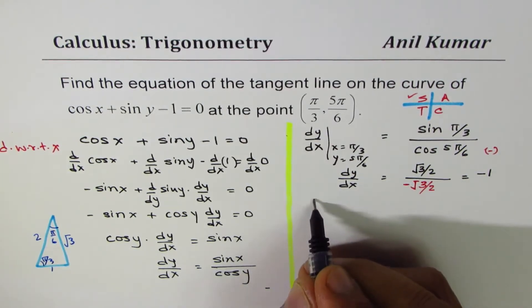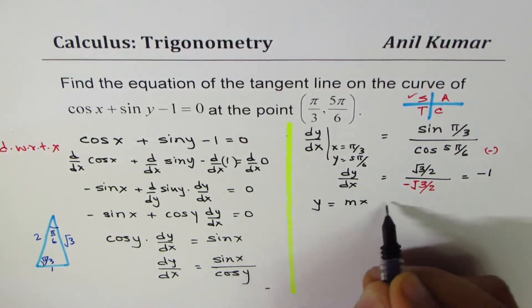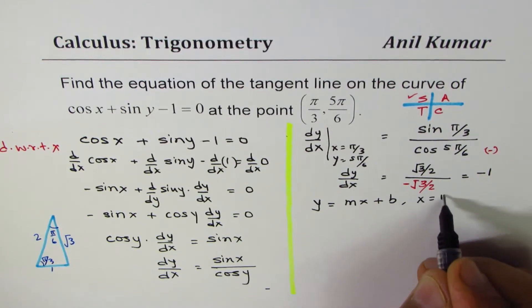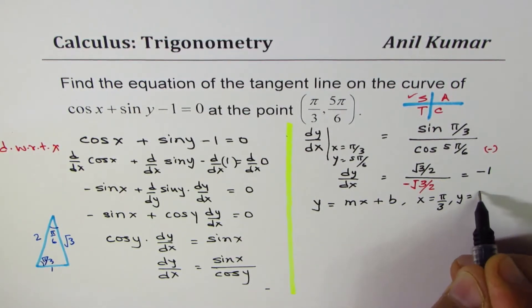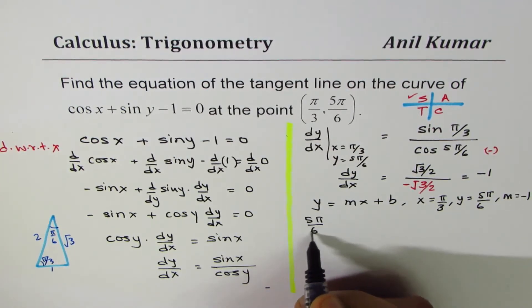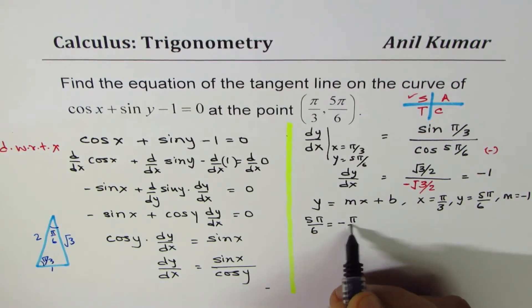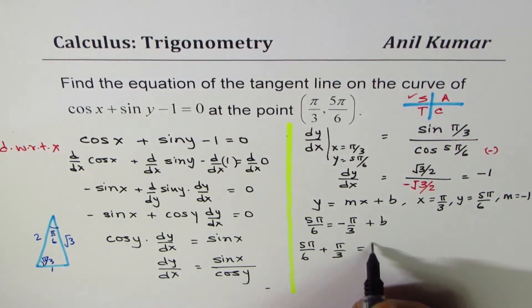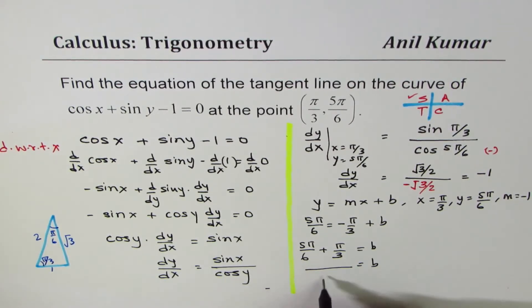Once you know the derivative, you can write the equation of the line as y = mx + b. To find the value of b, we can put the point where x equals π/3, y equals 5π/6, and m equals -1. So 5π/6 = -π/3 + b. Taking this to the left side, we get 5π/6 + π/3 = b. Taking 6 as a common denominator, 5π + 2π, so we get this as 7π/6.